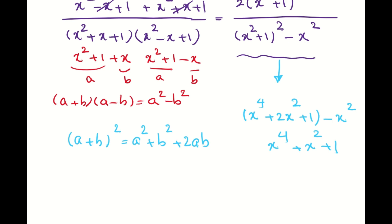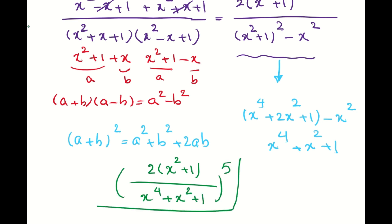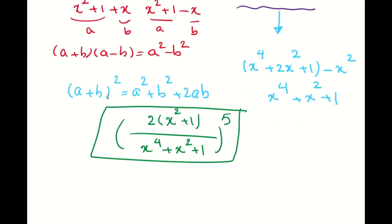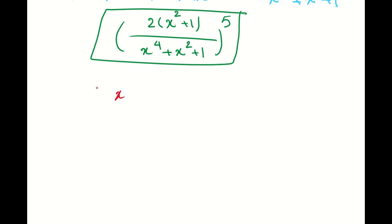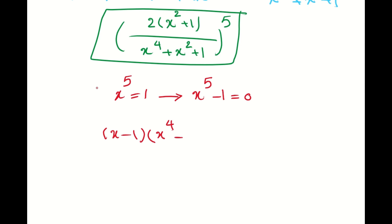So the full expression inside the power of 5 simplifies to 2(x² + 1) over (x⁴ + x² + 1). This is the expression we need to evaluate raised to the 5th power. Now, going back to the given condition: x⁵ = 1, so x⁵ − 1 = 0. I will use the factoring identity: x⁵ − 1 = (x − 1)(x⁴ + x³ + x² + x + 1).